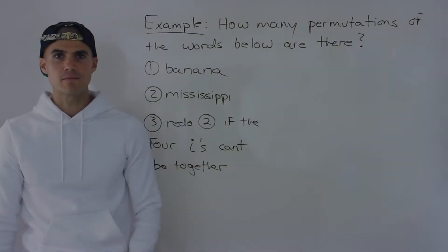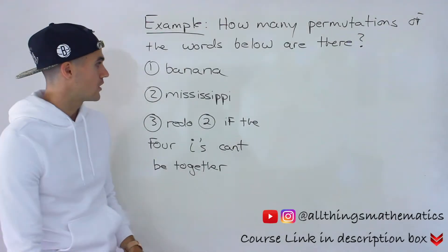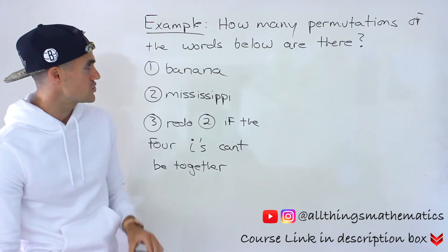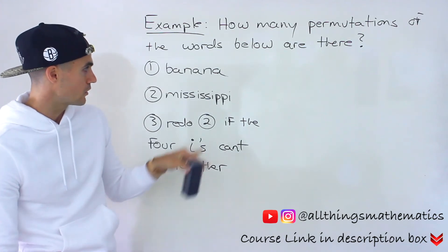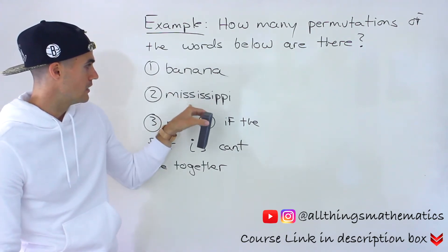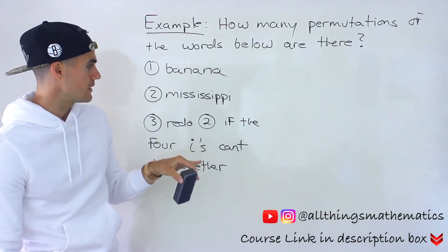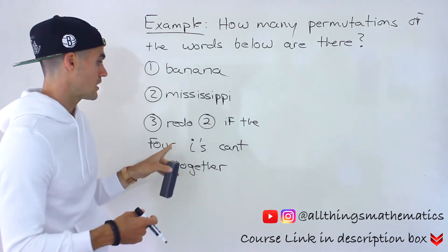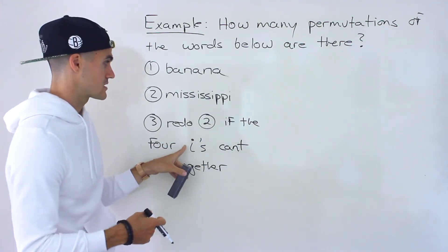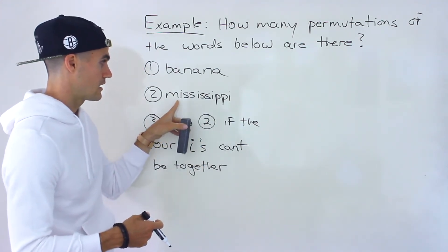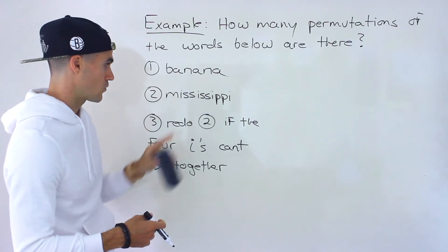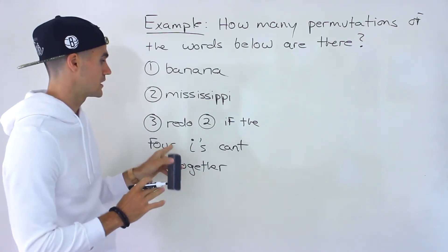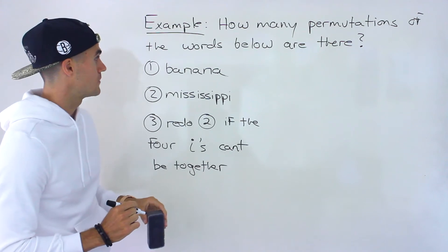What's going on everyone? Welcome back. Patrick here. Moving on to the next example. We have to figure out how many permutations of the words below there are: the word banana, Mississippi, and then number three, we have to redo number two if the four I's in the word Mississippi can't be together. So there's going to be a condition in number three.